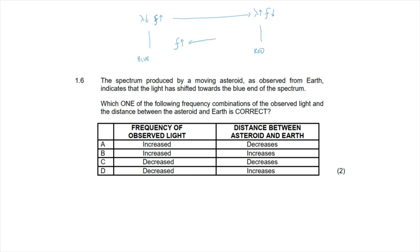This blue shift can only occur if the waves are being compressed as they approach Earth. As the asteroid moves closer, the emitted waves compress, making the frequency appear higher. This tells us the asteroid is moving towards the Earth — a blue shift implies the two objects are moving towards each other. The frequency of the observed light has increased, so the correct answer to 1.6 is option A.